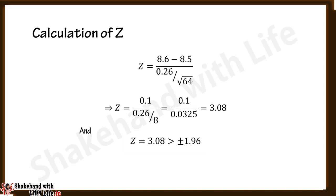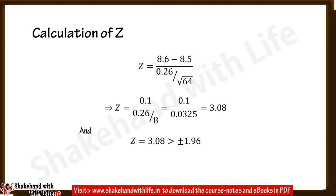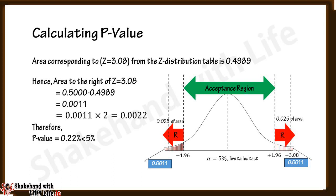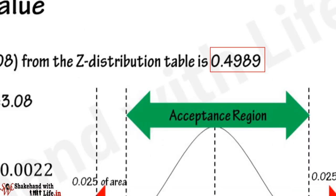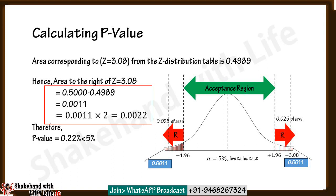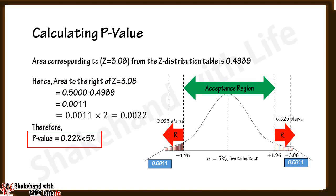If you want to calculate the p-value, find the area corresponding to Z = 3.08 from the Z distribution table, which comes out as 0.4989. Hence the p-value = (0.5000 − 0.4989) × 2 = 0.0011 × 2 = 0.0022, which is 0.22% — less than the significance level alpha of 5%.